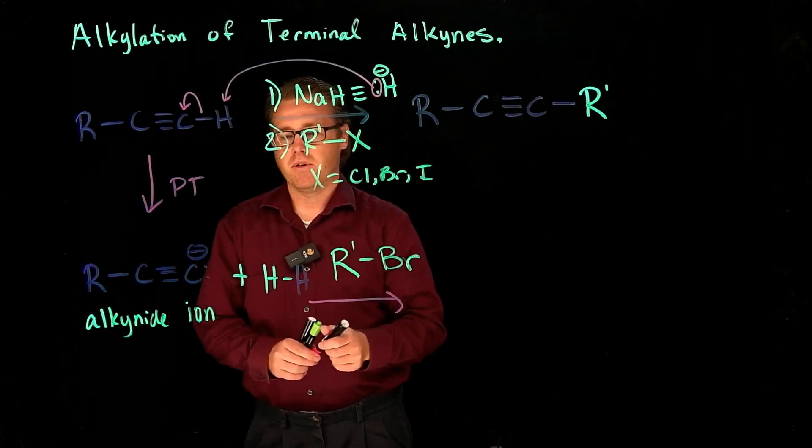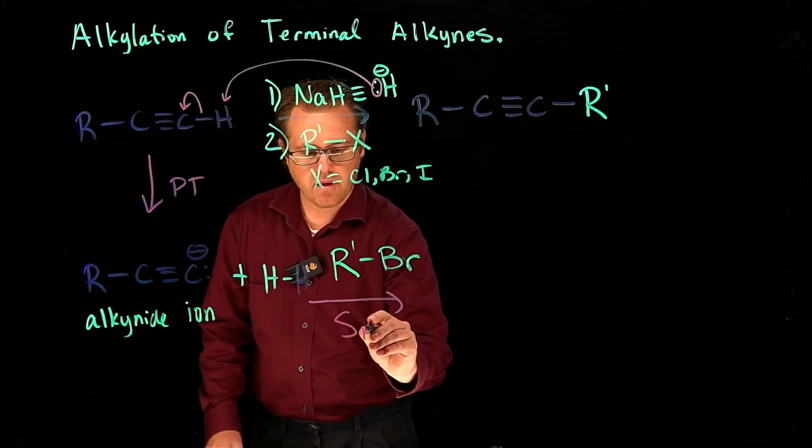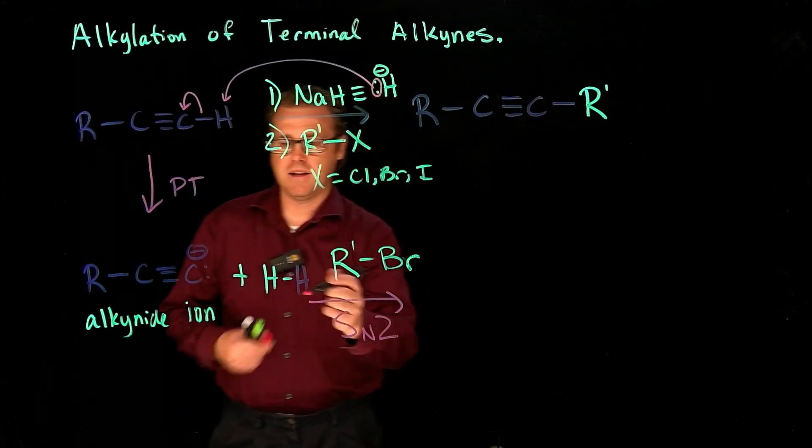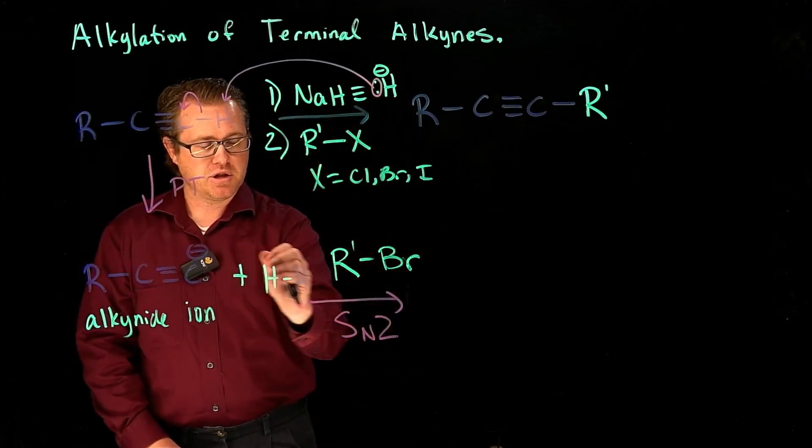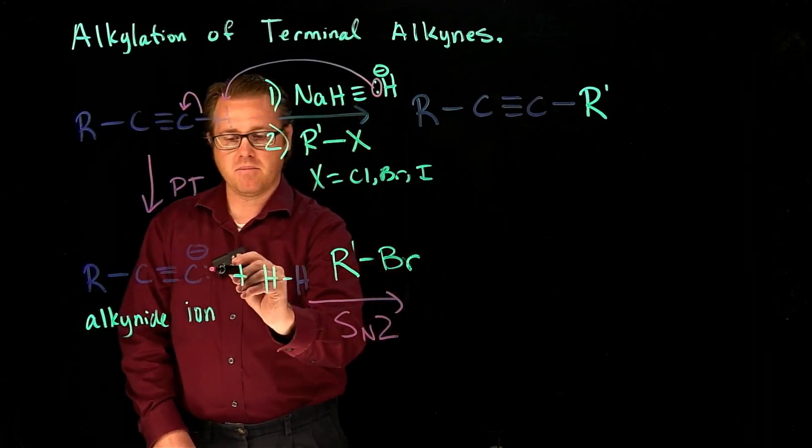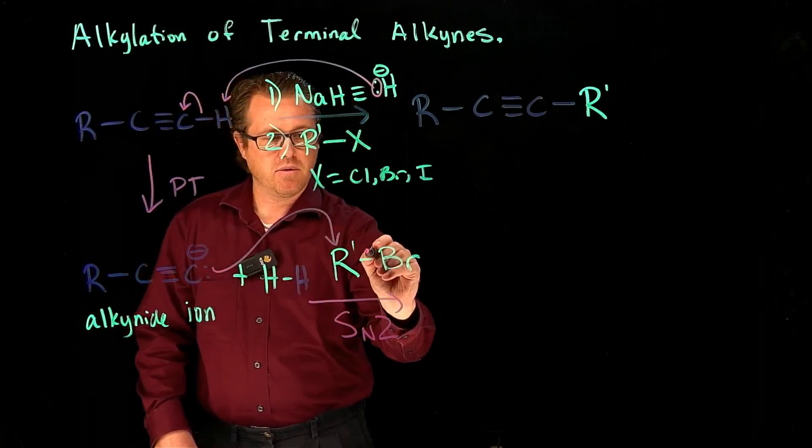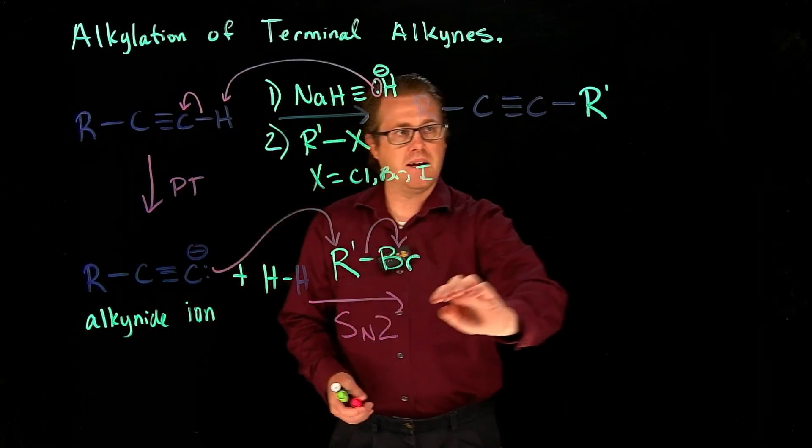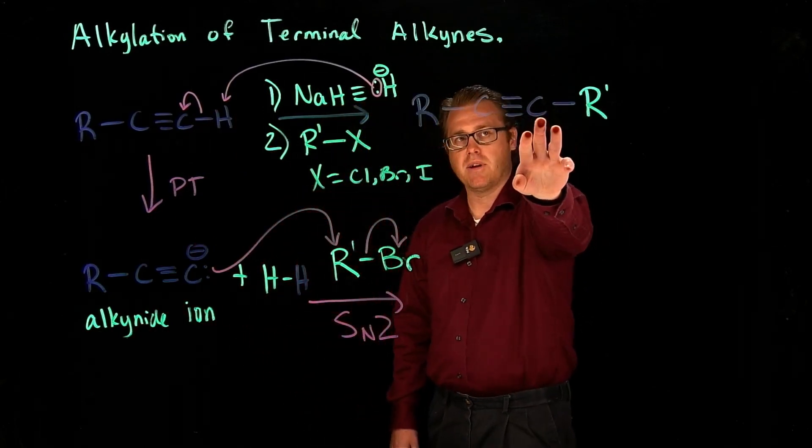We are going to invoke a SN2 mechanism here. Because this is electron rich, that carbon is electron poor, so we will invoke a SN2 mechanism to lead us to our product right there.